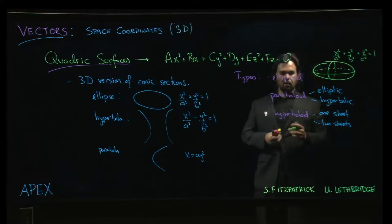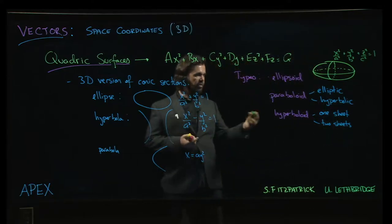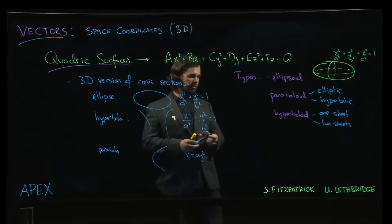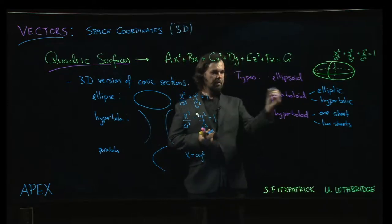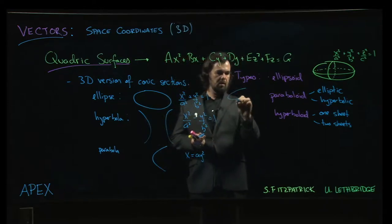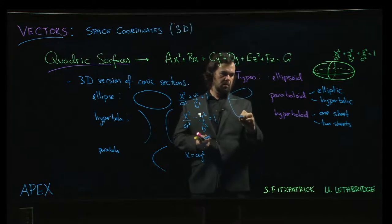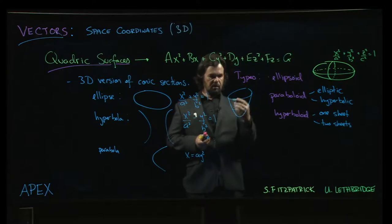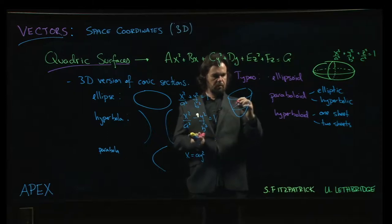Paraboloids - there are a lot of different versions depending on what axis they're opening along. But a typical elliptic paraboloid is like a bowl shape, something like that. When you cut it in one direction you get an ellipse, and if you cut it in other directions you get parabolas.